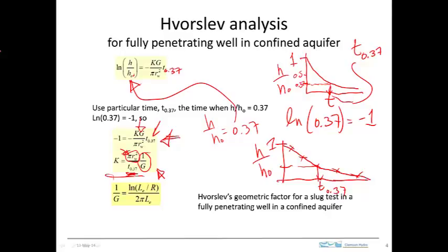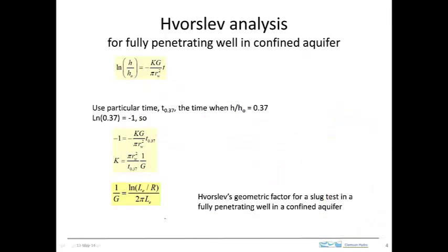Vorslev worked out geometry factors for several different scenarios. The most commonly used is for a fully penetrating well in a confined aquifer — where the well fully penetrates through the aquifer, much like the geometric scenario assumed for the Theis and Jacob solutions.